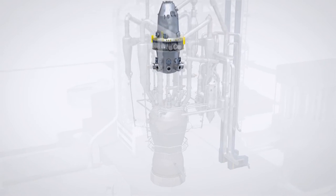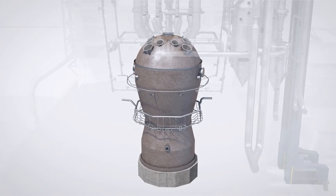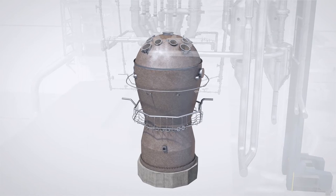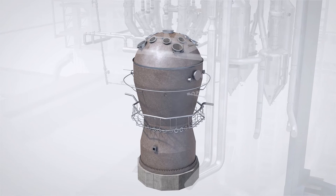Melting of the DRI is then carried out in the melter gasifier. Coal charged to the melter gasifier is gasified, providing the energy for melting as well as the reduction gas.